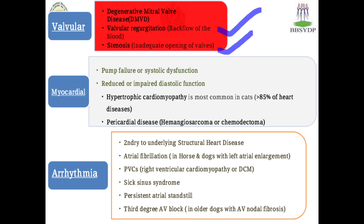Myocardial disorders include pump failure or systolic dysfunction and reduced or impaired diastolic function. Hypertrophic cardiomyopathy is most common in cats — around 85% of heart diseases in cats are due to hypertrophic cardiomyopathy. Pericardial diseases include hemangiosarcoma and chemodectoma as examples, and other complications such as pericarditis or traumatic pericarditis. Arrhythmia may result secondary to underlying structural heart diseases, with structural changes in the endocardium, pericardium, or myocardium potentially resulting in arrhythmia.